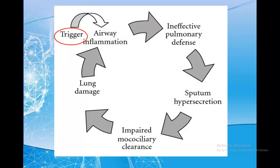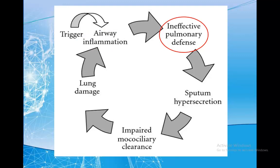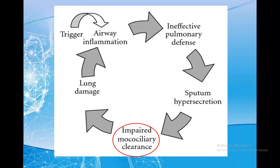In bronchiectasis, the trigger — which could be a foreign body like bacteria or a virus — enters the airways, causing them to inflame. Any infection will cause an inflammatory response from the body as a defensive mechanism. The airways will try to clear out the microbes but this proves ineffective. In response to the inflammation, more mucus is produced due to enlargement of the mucus-secreting cells, forming a thick mucus plug. This mucus hypersecretion is accompanied by ciliary dyskinesia — impaired cilia mobility — meaning there is reduced clearance of the microbe. The microbe then begins to settle and form a colony, resulting in chronic inflammation and destruction of the elastin and cartilage in the bronchi, causing permanent dilatation.